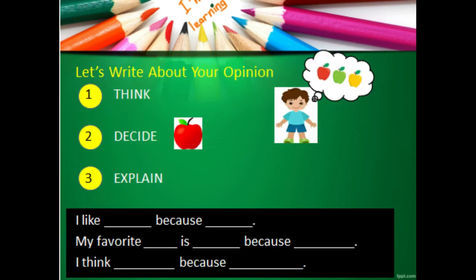So here are some steps to our opinion writing. First we think — like the boy over here, he's thinking: do I like red apples, do I like green apples, or do I like yellow apples? Then number two, you have to decide. He decided he likes red apples. But he can't just leave it there — he has to explain why.